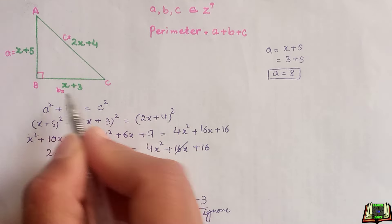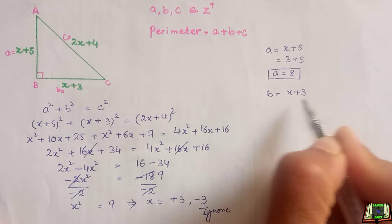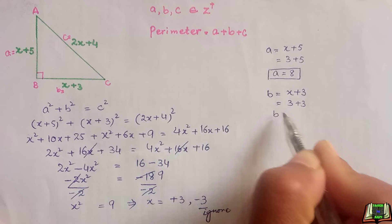Now the side b. b is equal to x plus 3. x is 3, so 3 plus 3, b is equal to 6.